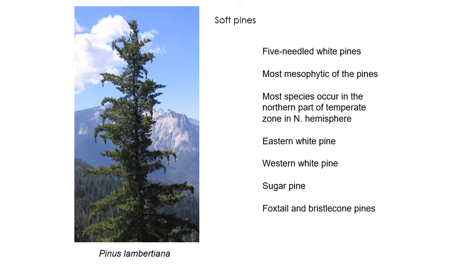There are two main types of pines. Soft pines are five-needle pines — pines have needles that occur in clusters joined by a structure called a fascicle, and all soft or white pines have five needles. Those needles are typically relatively thin and soft. These are the most mesophytic of the pines, adapted to the wettest sites, occurring in the northern part of the temperate zone. Really common ones include eastern white pine, western white pine, sugar pine, foxtail, and bristlecone pines. Here's a picture of sugar pine, Pinus lambertiana, in the Sierra Nevada of California.